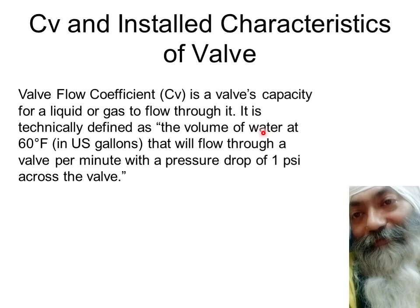We have taken water, which defines the density. We have set the temperature because density may also vary with temperature, so we fix both the temperature and density. The flow units should be in US gallons per minute, and that flow which produces a pressure drop of 1 psi across the valve is known as the flow coefficient of the valve.